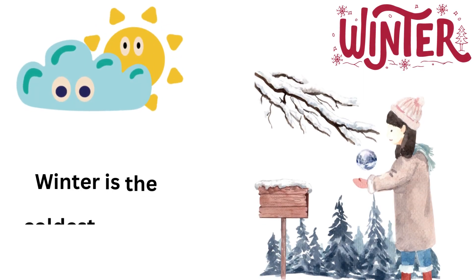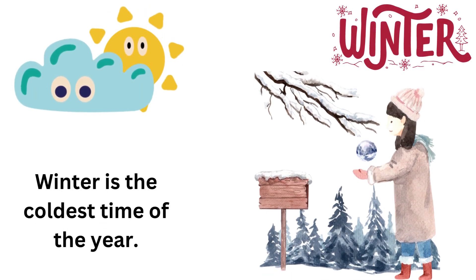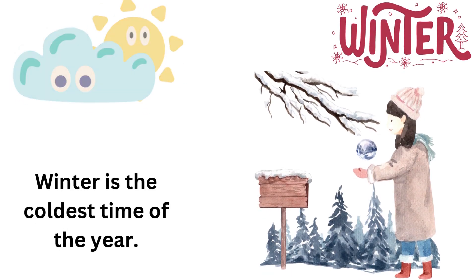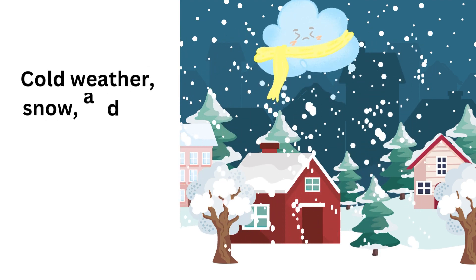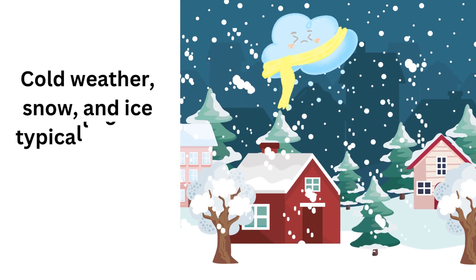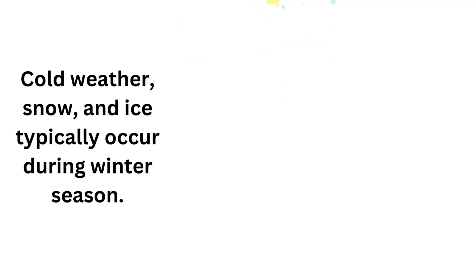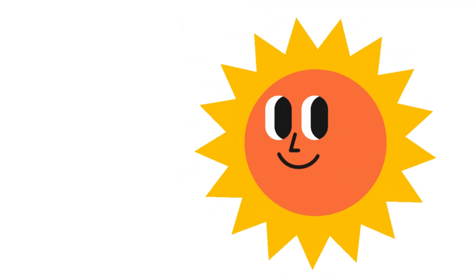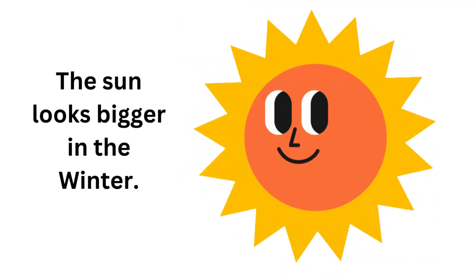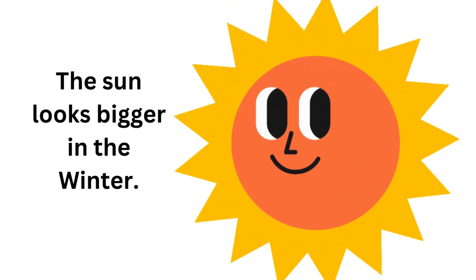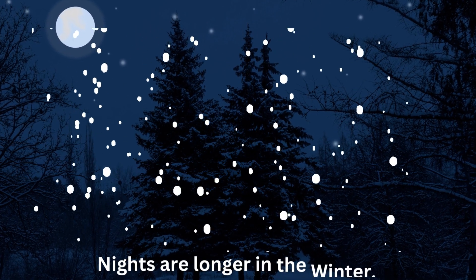Winter season is the coldest time of the year. Cold weather, snow, and ice typically occur during winter season. The sun looks bigger in the winter. Nights are longer in the winter.